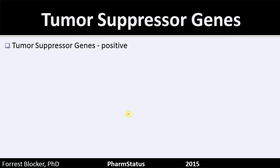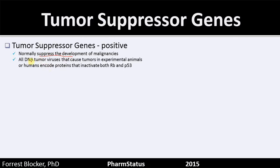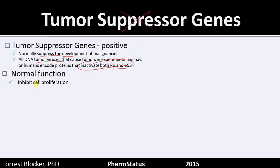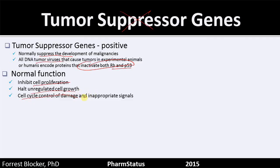Tumor suppressor genes — they suppress the development of malignancies, which means cancer. Normally, all DNA tumor viruses that cause tumors in experimental animals or humans encode proteins that inactivate both of these tumor suppressor genes, RB and P53. DNA tumor viruses can turn off tumor suppressor genes. Their function is to inhibit cell proliferation, to halt unregulated cell growth. It's a cell cycle control of damage and inappropriate signals — a place to say wait, stop.